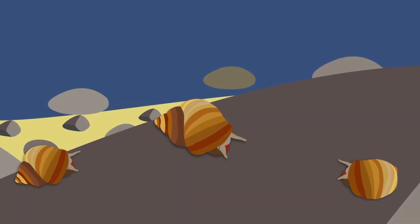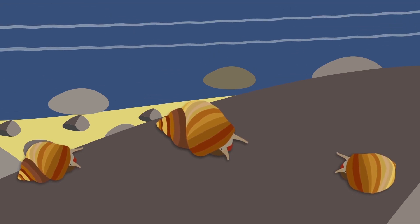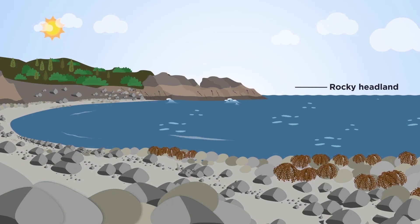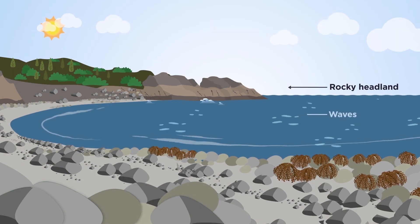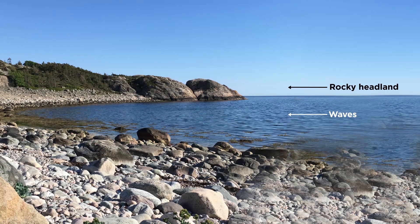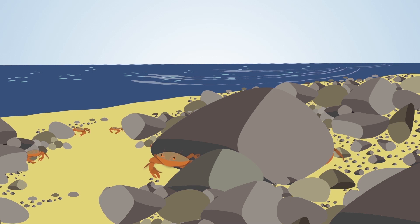These marine snails live in two distinct, contrasting habitats: the rocky headland, where cliffs are battered by the action of the waves, and the bouldershaw, home to many predatory crabs.